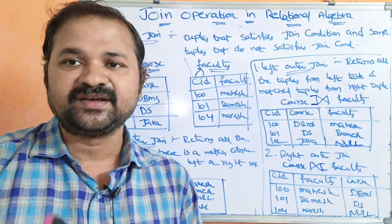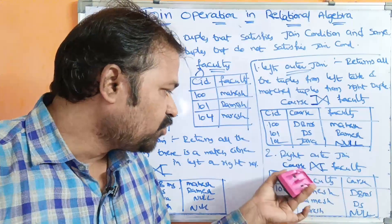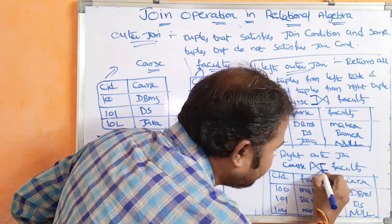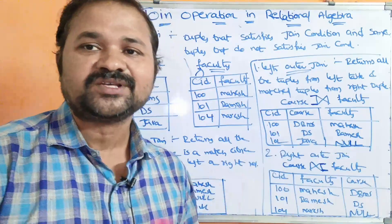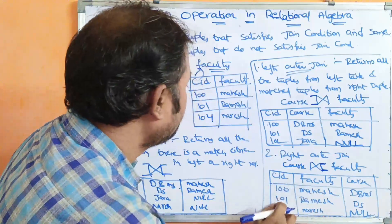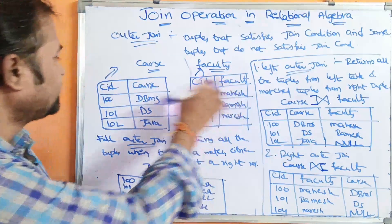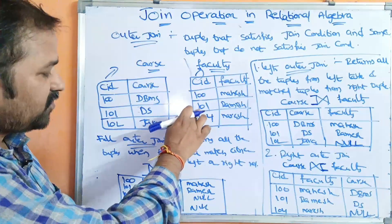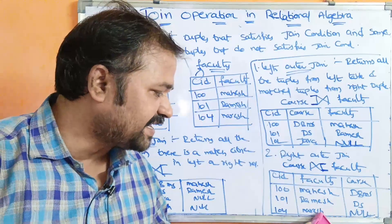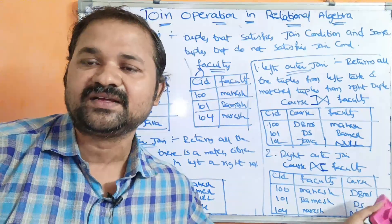Now let us see about right outer join. It returns all the tuples from the right table and only the matched tuples from the left table. Course right outer join faculty — faculty is the right table, so all tuples from the right table are printed: 100 Mahesh, 101 Ramesh, 104 Naresh. For 100 the course is DBMS, for 101 the course is data structure. But 104 course ID is not available in the course table, so that course will be taken as null.